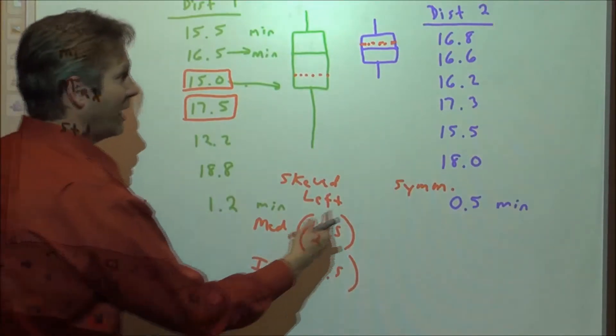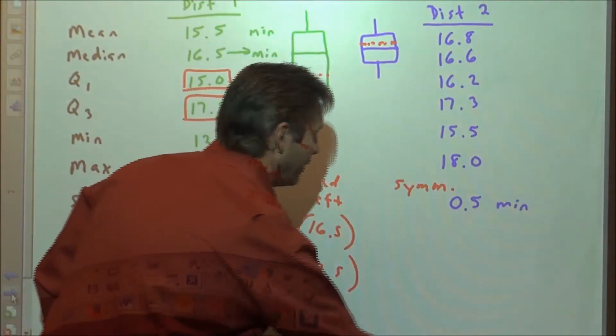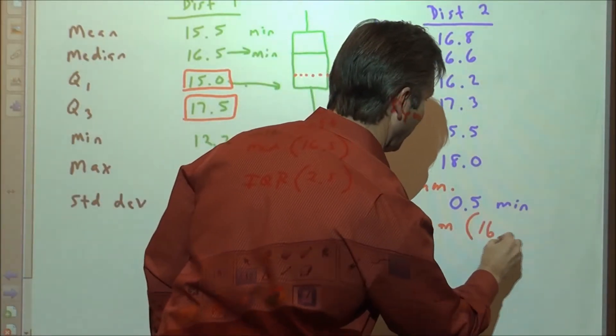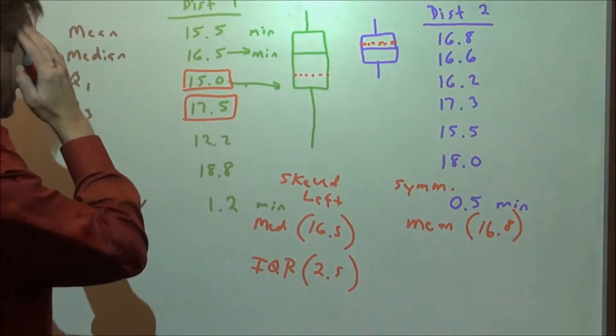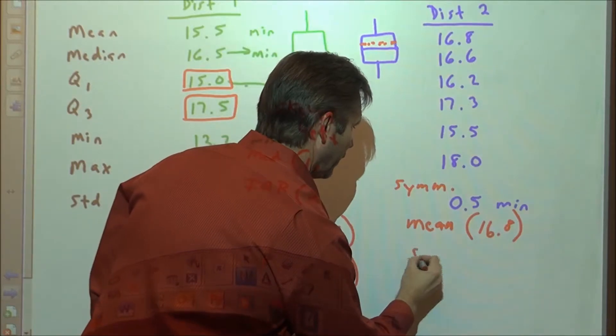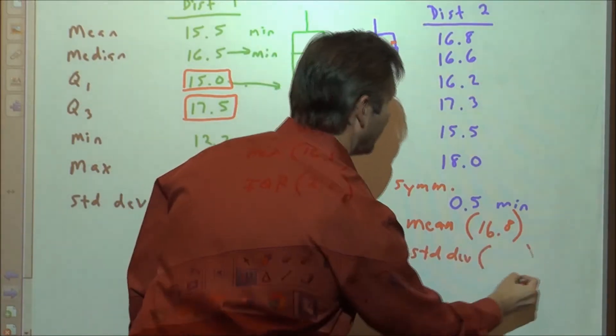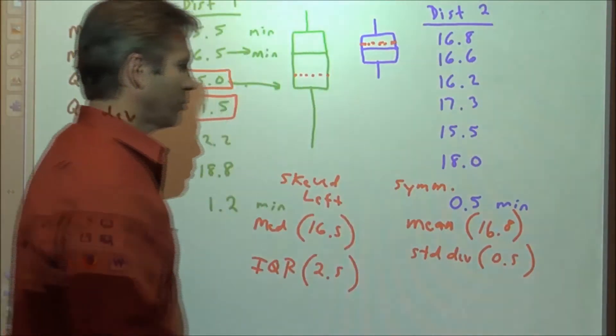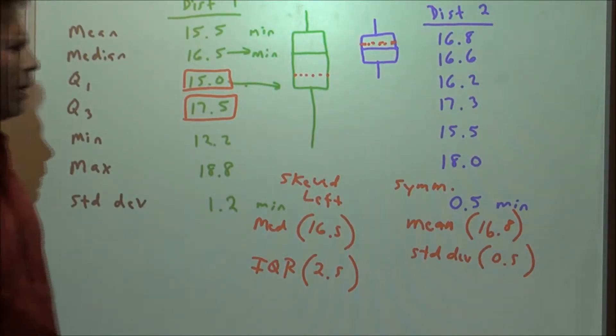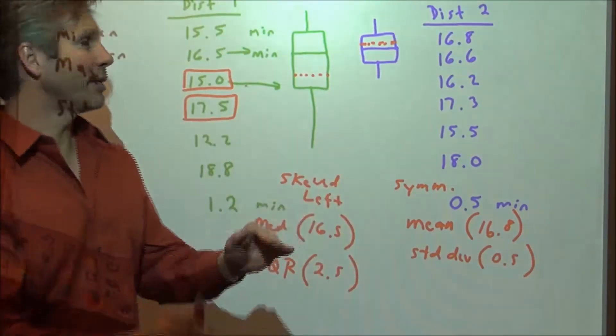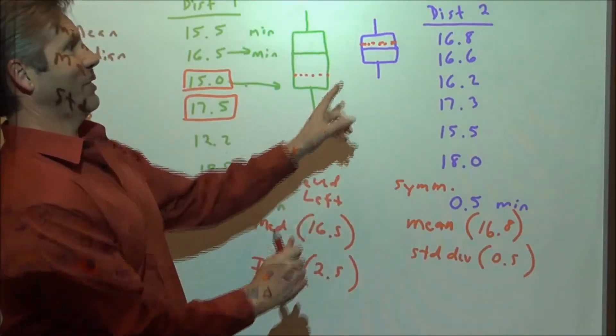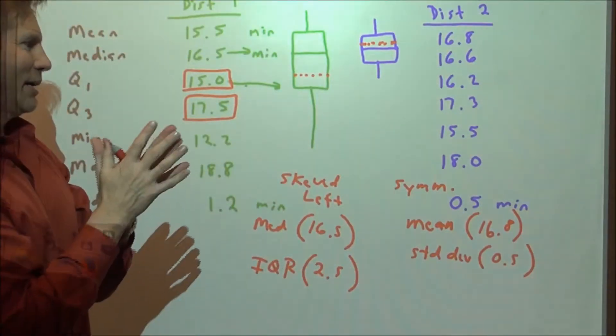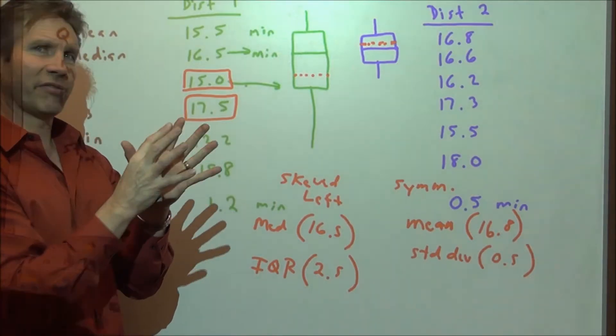So it's symmetric. We would say that we will now report the mean. For these guys, we're going to say that the mean is what's reported, and that is 16.8. And the standard deviation here is 0.5 minutes. The better descriptor of the distribution is to say that it's fairly symmetric.